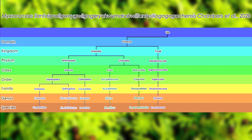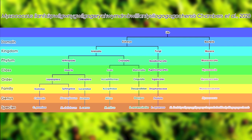Finally, we have Myxococcus llanfairpwllgwyngyllgogerychwyrndrobwllllantysiliogogogochensis (Chambers et al., 2020). I don't know why I chose that one — I thought it'd be really funny to do that and do it all perfectly, but clearly I cannot do that. I'm going to have to say it again. Anyway: Domain Bacteria, Kingdom Monera, Phylum Myxococcota, Class Myxococcia, Order Myxococcales, Family Myxococcaceae, Genus Myxococcus, and Species M. llanfairpwllgwyngyllgogerychwyrndrobwllllantysiliogogogochensis. Perfect, nailed it.